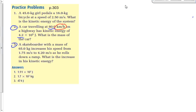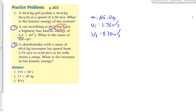Number three: a skateboarder with a mass of 65 kilograms increases his speed from 1.75 to 4.2 meters per second. We have m = 65 kg, vi = 1.75 m/s, vf = 4.2 m/s, and we're looking for the increase in kinetic energy, delta Ek.